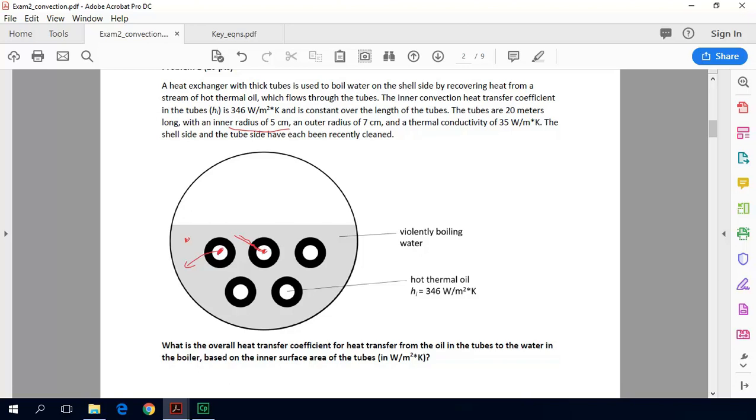So the radii of the tubes, the inner is 5 centimeters, the outer is 7. The tubes are 20 meters long, but if you remember, our problem asks for the temperature at 8 meters. So effectively, that's going to be an 8 meter long heat exchanger. So when we find the equation, we'll just replace the total length of the heat exchanger with X.